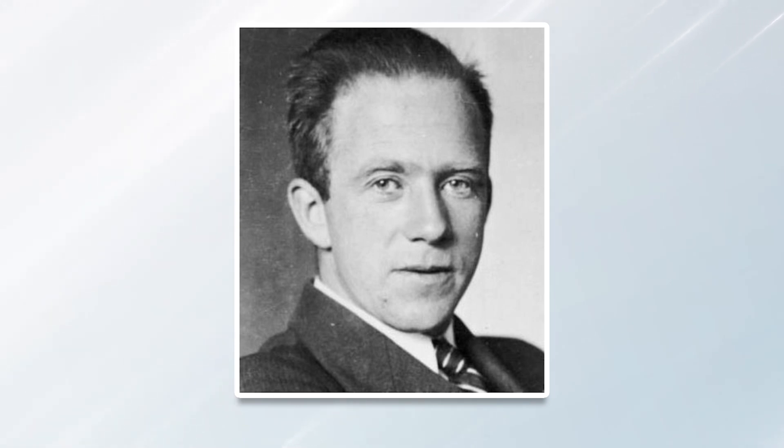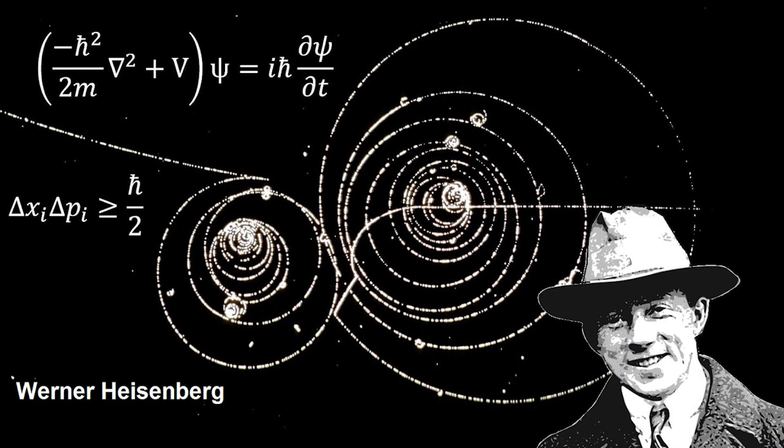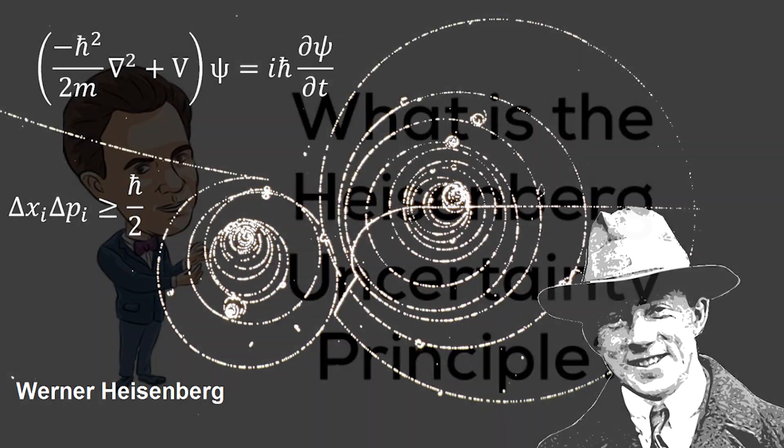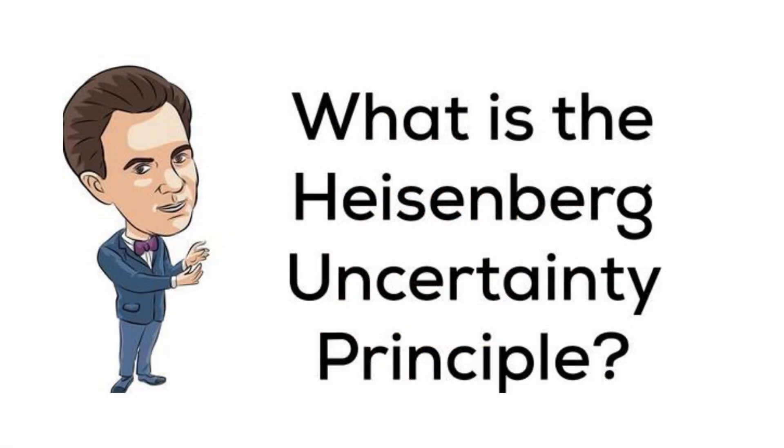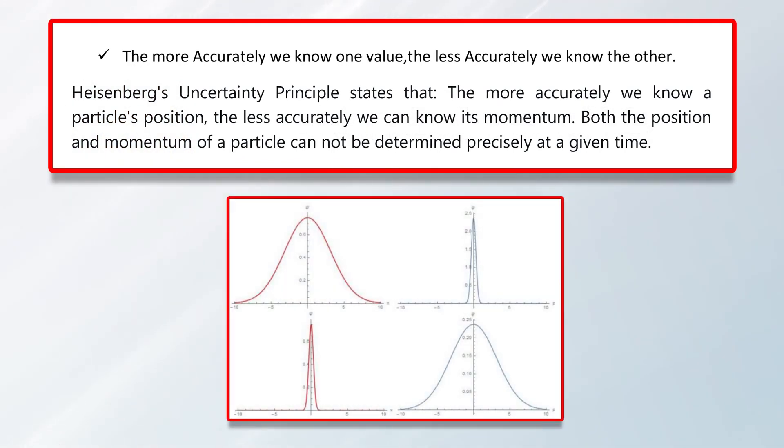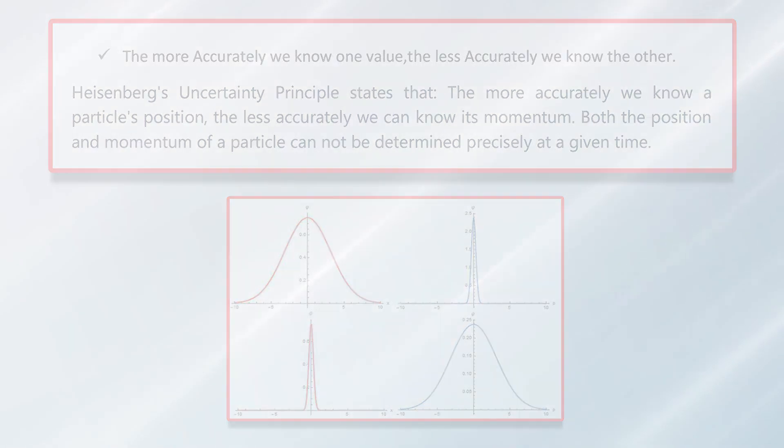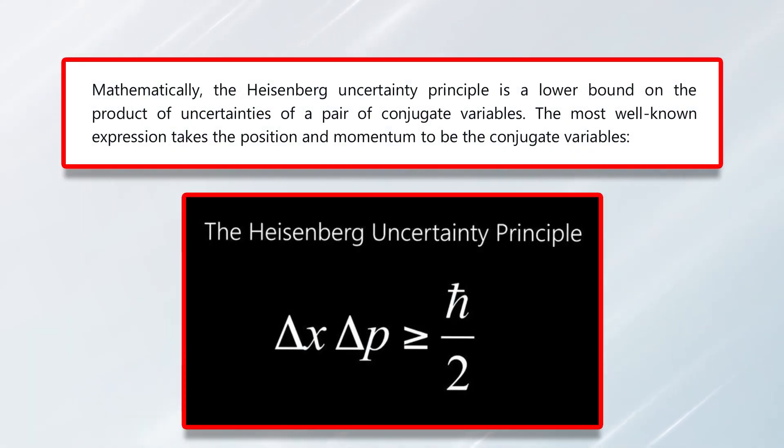Three, uncertainty principle. In 1927, Werner Heisenberg introduced the concept of inherent uncertainty with the simultaneous knowledge of the position of a particle and its momentum. This concept is a foundational concept of quantum mechanics and is called Heisenberg uncertainty principle. It says that we cannot measure the position and the momentum of a particle simultaneously. The more accurately we know one value, the less accurately we know the other. Heisenberg uncertainty principle states that the more accurately we know a particle's position, the less accurately we can know its momentum. Both the position and the momentum of a particle cannot be determined precisely at a given time. Mathematically, the Heisenberg uncertainty principle is a lower bound on the product of uncertainties of a pair of conjugate variables. The most well-known expression takes the position and momentum to be conjugate variables.